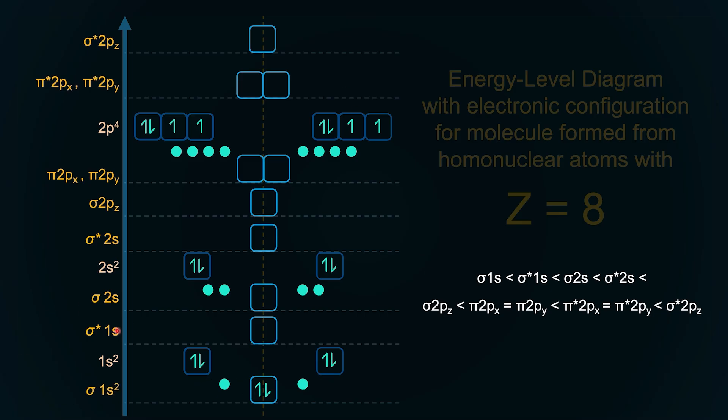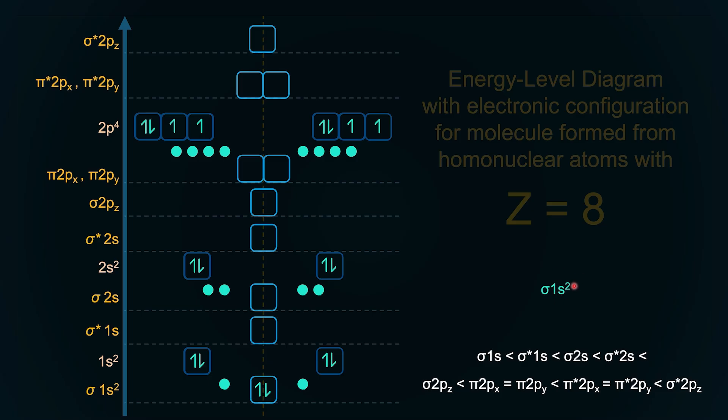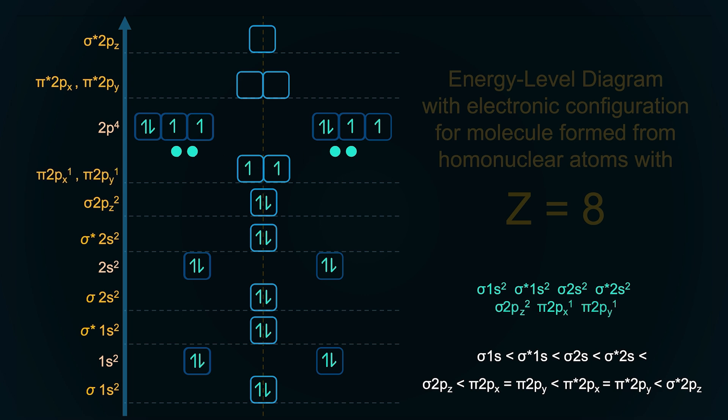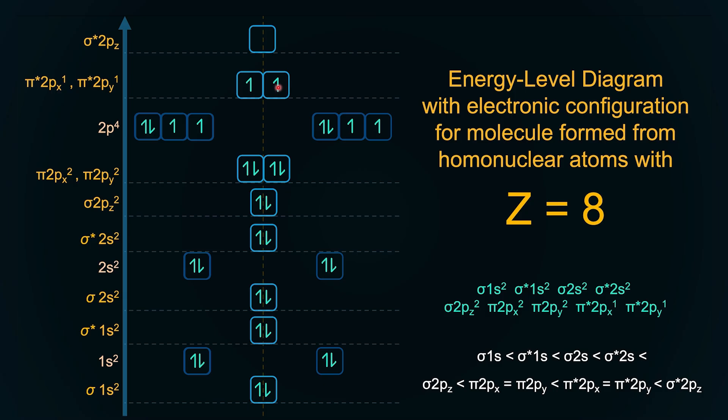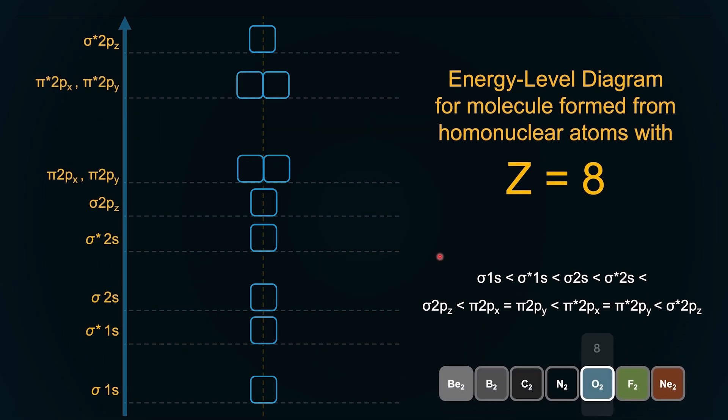First, 1s2, sigma 1s2, then let's write it down here as well. Sigma 1s2, then sigma star 1s2, then sigma 2s2, then sigma star 2s2. Great. Then sigma 2pz2, then pi 2px and 2py each get an unpaired electron, then the electrons pair up. That's how we would fill, remember. And then the pi star 2px and 2py each get one unpaired electron. For z equal to 8, sigma 1s2, sigma star 1s2, sigma 2s2, sigma star 2s2, sigma 2pz2, pi 2px2, pi 2py2, pi star 2px1, pi star 2py1. This is the electronic configuration. Great.